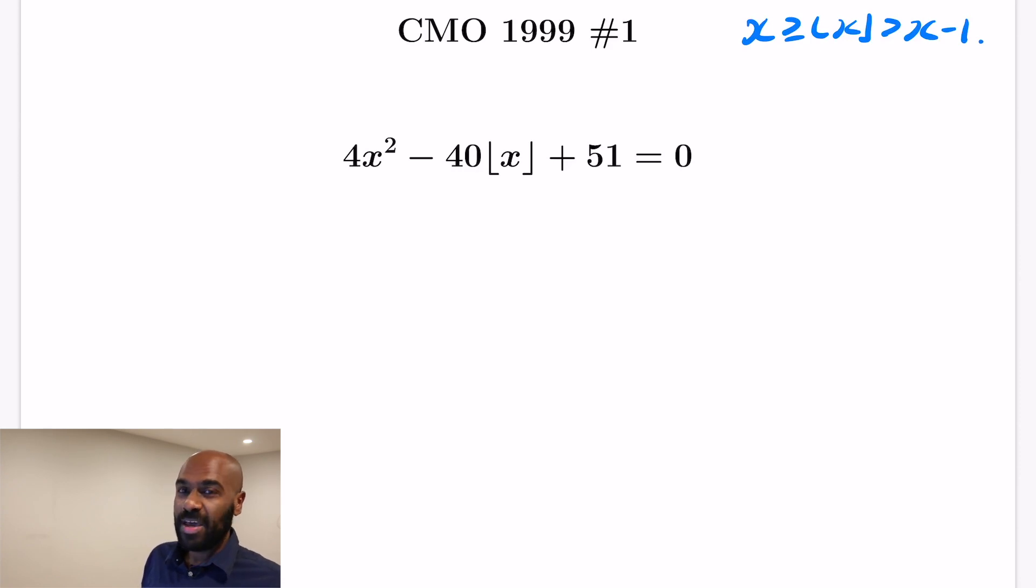So the advantage of that is we can use that to get inequalities that x must satisfy if you rearrange the given equation. The given equation says that 4x² + 51 = 40⌊x⌋, so using this set of inequalities we just wrote down, you'll be able to find inequalities that x must satisfy, which restricts the values of x that can satisfy this equation.